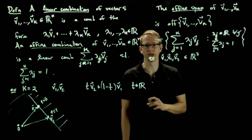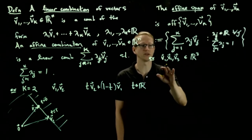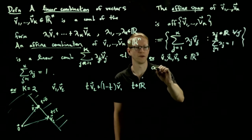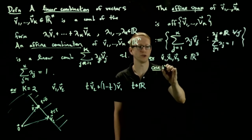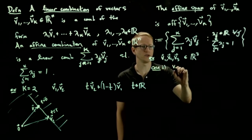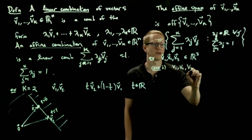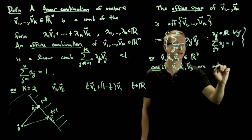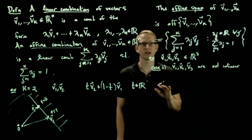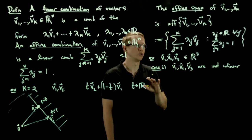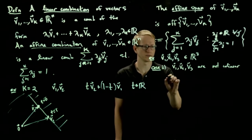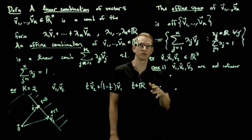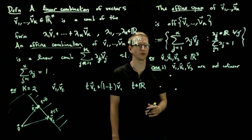Same thing happens for affine span in the sense that it depends on how these vectors are related. So let's look at three possible cases. So case one, let's say v1, v2, and v3 are not collinear. So this means that all these three points don't lie on the same line. So maybe they look something like this. Like for instance, you can take the unit vectors e1, e2, and e3 in R3.